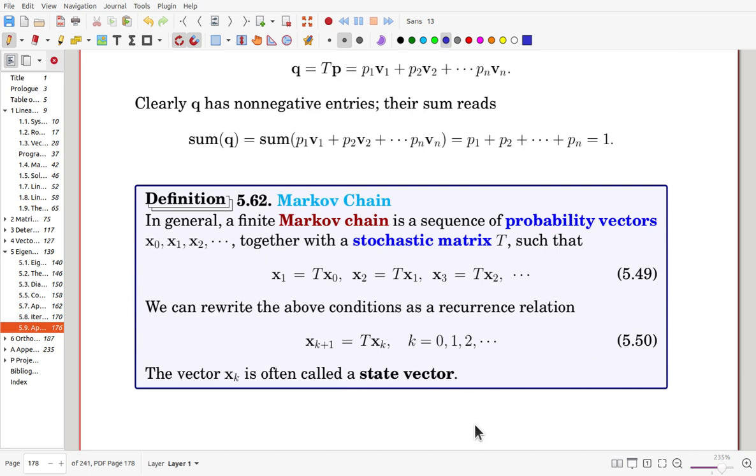Now we define the Markov chain. In general, a finite Markov chain is a sequence of probability vectors, x0 to the later vectors, together with a stochastic matrix, such that x1 is obtained from x0, with multiplication of the stochastic matrix, and x2 is again from x1, x3 is again from x2, so that one stage of vector, the probability vector, is transformed to the next stage, without using the earlier stage, so that that is Markov chain.